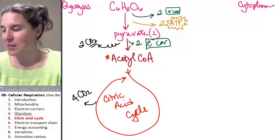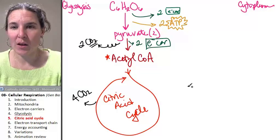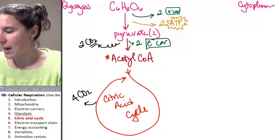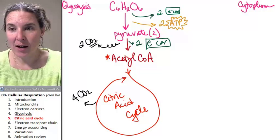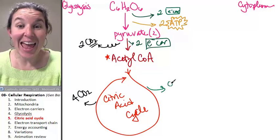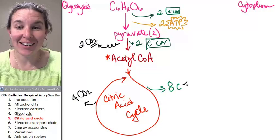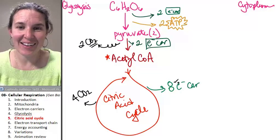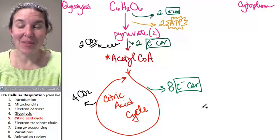We get, I'm going to summarize this puppy for you. We get eight high-energy electron carriers. Eight of them. What? Yeah. That's awesome.